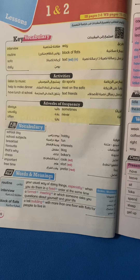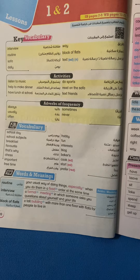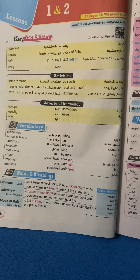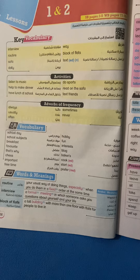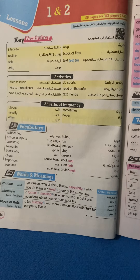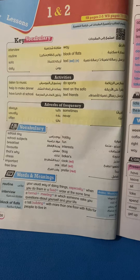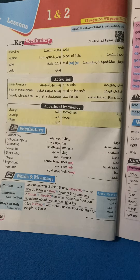Way. Way means طريق. Block of flats. Block of flats means عمارة — عمارة سكنية زي اللي إحنا بنعيش فيها.